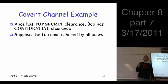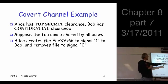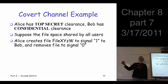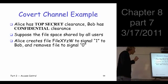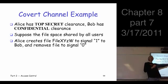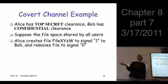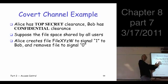So here's what Alice is going to do to get information to Bob. She's going to create a file and give it a weird name that Alice and Bob agreed on ahead of time. If that file is there, that signals to Bob a one; if it's not there, that signals a zero. So either she creates this file or not — Bob goes to look, and Alice has sent one top secret bit of information to Bob.